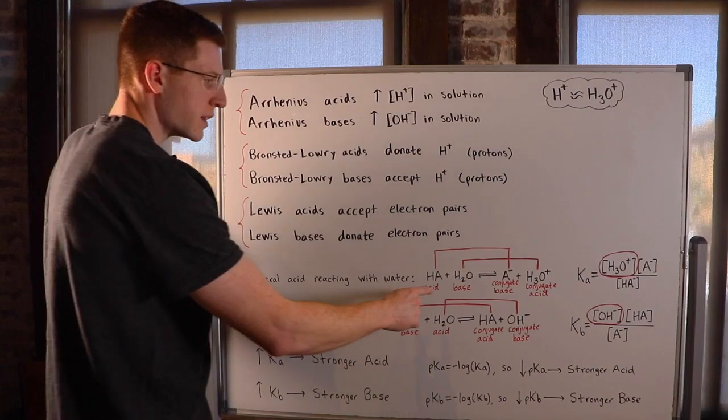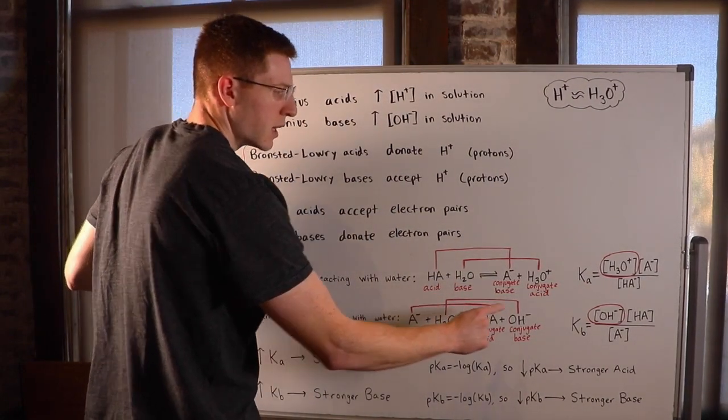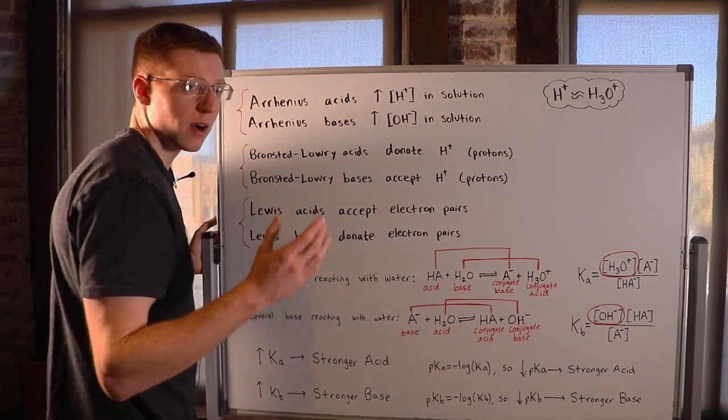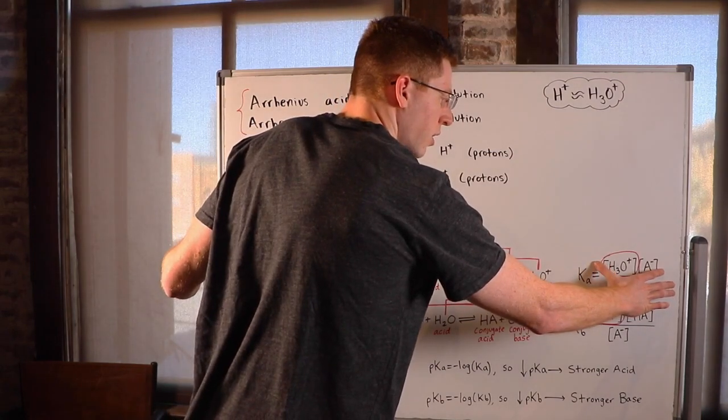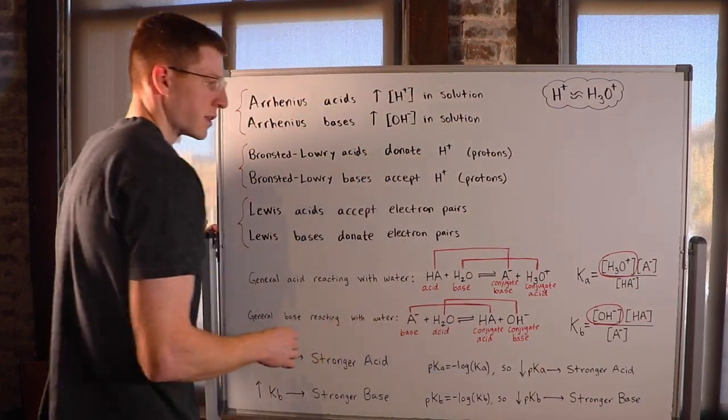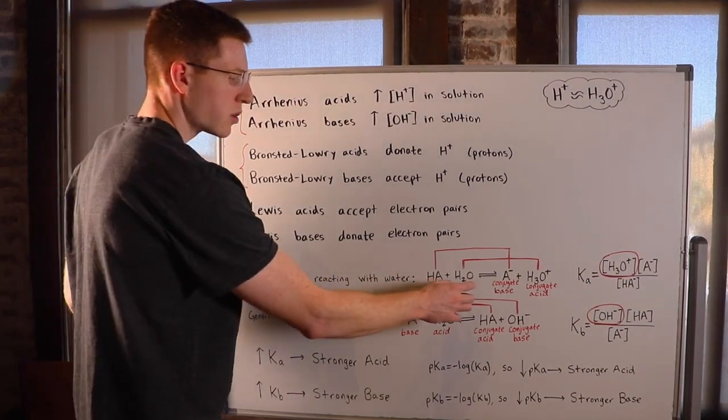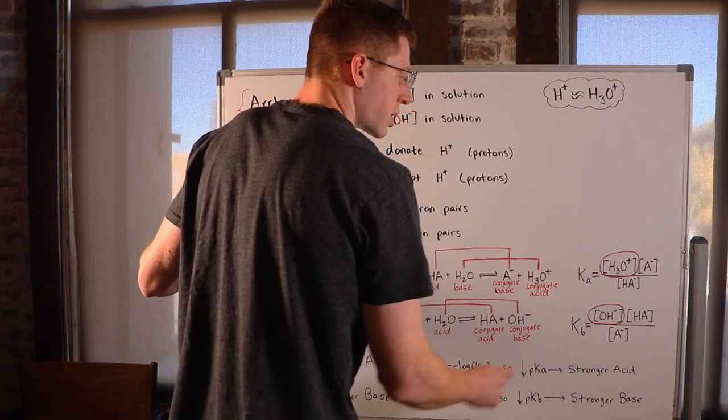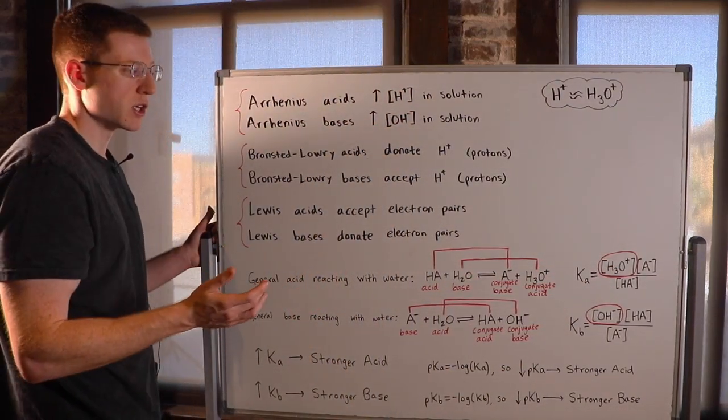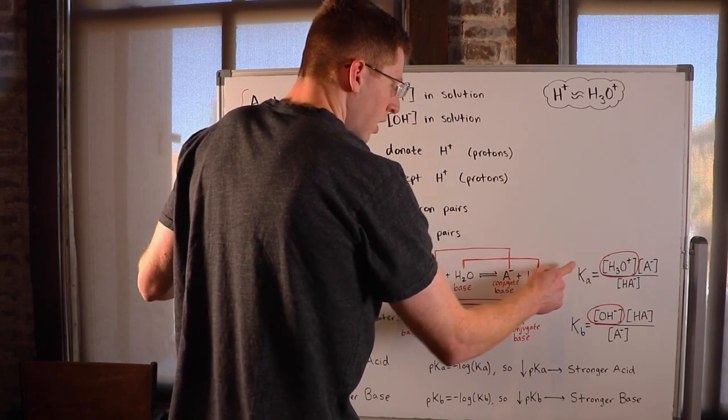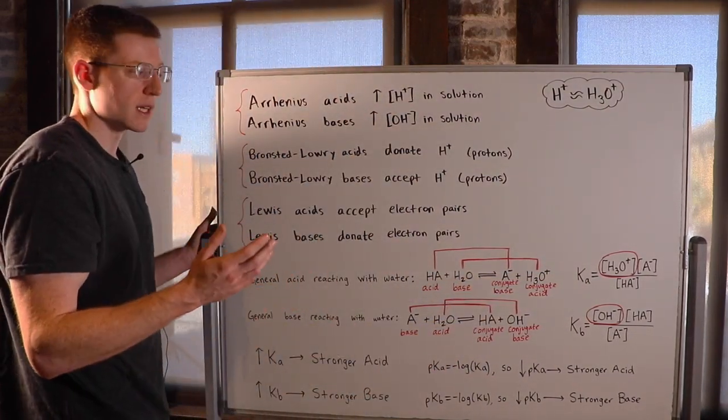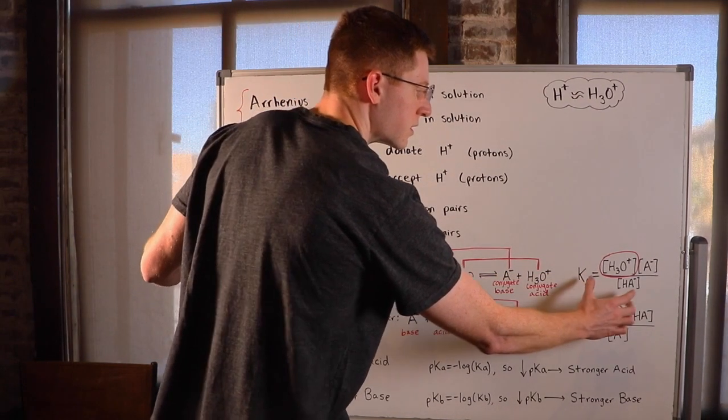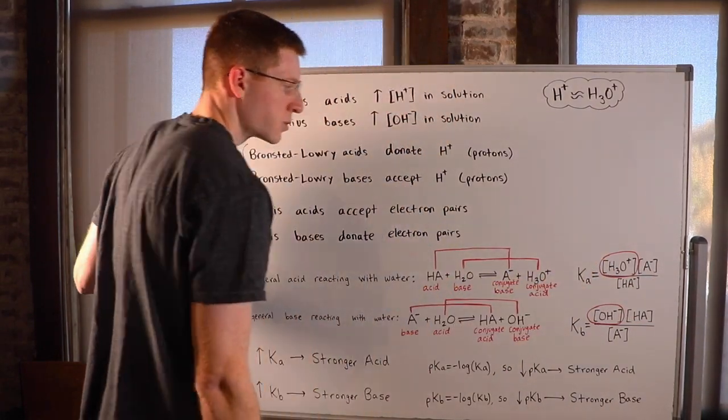If I were to write the equilibrium expression for this acid right here, we actually abbreviate that K-sub-A for acid. When we write an equilibrium expression, we put the concentration of the products in the numerator and the concentration of the reactants in the denominator. We're going to exclude water because it is a pure liquid. You can see here that H3O+ is really what is going to control the pH. So we care about that the most here. All of these other things have a very minor effect on the pH relative to H3O+. So the higher the Ka, the bigger this numerator, and the more H3O+ we have.